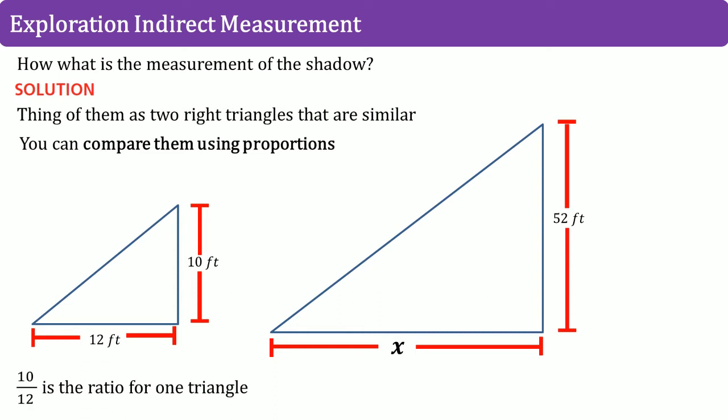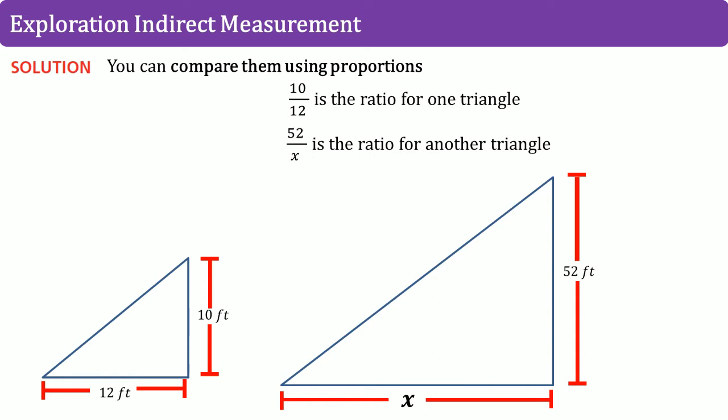10 feet divided by 12 feet is the ratio for that smaller triangle. The 52 feet divided by X is the ratio for the other triangle. So, let's look at the solution on how we do this. You can compare these two ratios using a proportion. 10 over 12 equals 52 over X. Cross multiply, 10 times X. When you cross multiply, it should look something like this. 10 times X and 52 times 12.